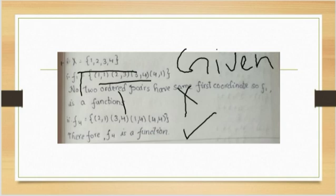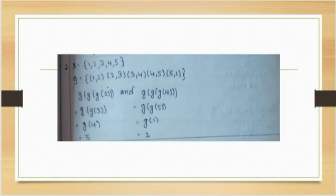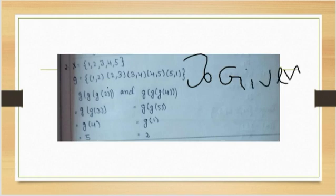Now next question. Let x = {1, 2, 3, 4, 5}. If the relation g = {(1,2), (2,3), (3,4), (4,5), (5,1)} is a function from x to x, and f² = x, then find g∘g∘g(2) and g∘g(4). Always write the given information first. So g∘g∘g(2): starting with 2, applying g gives 3, then 4, then 5. So the answer is 5.